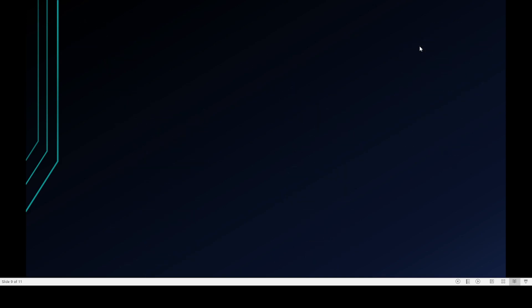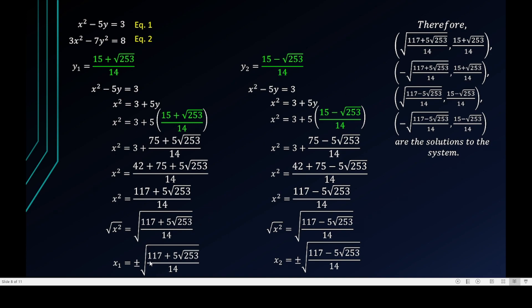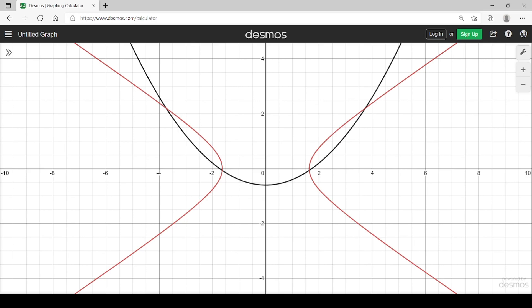Therefore, the four solutions to the system are: (positive x₁, y₁), (negative x₁, y₁), (positive x₂, y₂), and (negative x₂, y₂). You may verify these using Desmos or a graphing calculator.